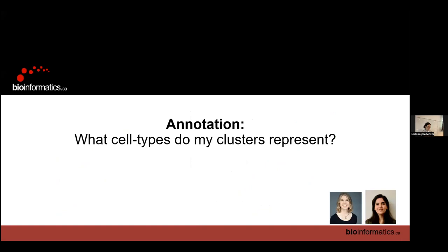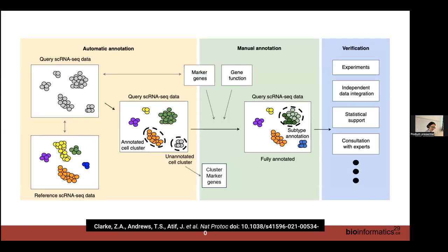Hand in hand with clustering goes annotation, because you want your clusters to represent cell types. You can go back and forth: can I annotate these clusters as different cell types? If I can't figure out the cell type of a cluster, should I change my clustering resolution? This is a paper we did with Delaram, one of your TAs. We recommend starting with unclustered data, running it through a reference dataset for automatic annotation to see what cell types you can identify.